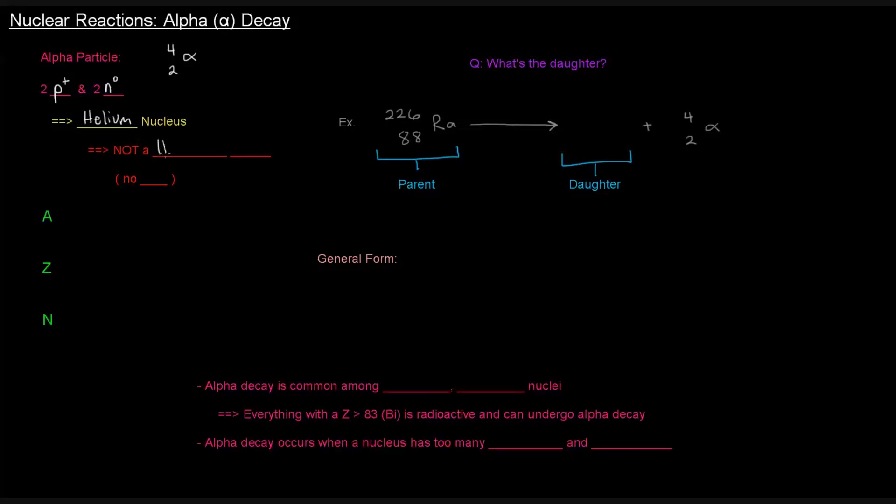However, this is not a helium atom. There's an important difference between the two. The helium atom has electrons. Helium nucleus does not. We're not thinking about the atom. An alpha particle is just the helium nucleus, no electrons.